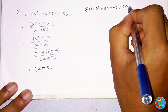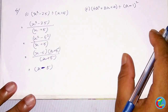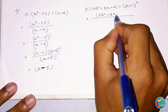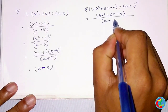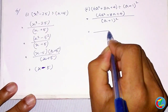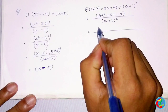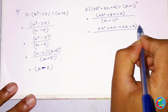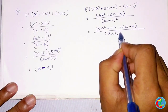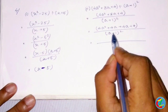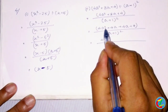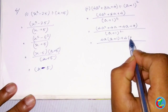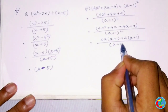4a squared plus 8a plus 4 whole — we can write this as a plus 1 squared. We can factor a plus 1 whole squared. The 4 common factor gives us 4 into a plus 1.